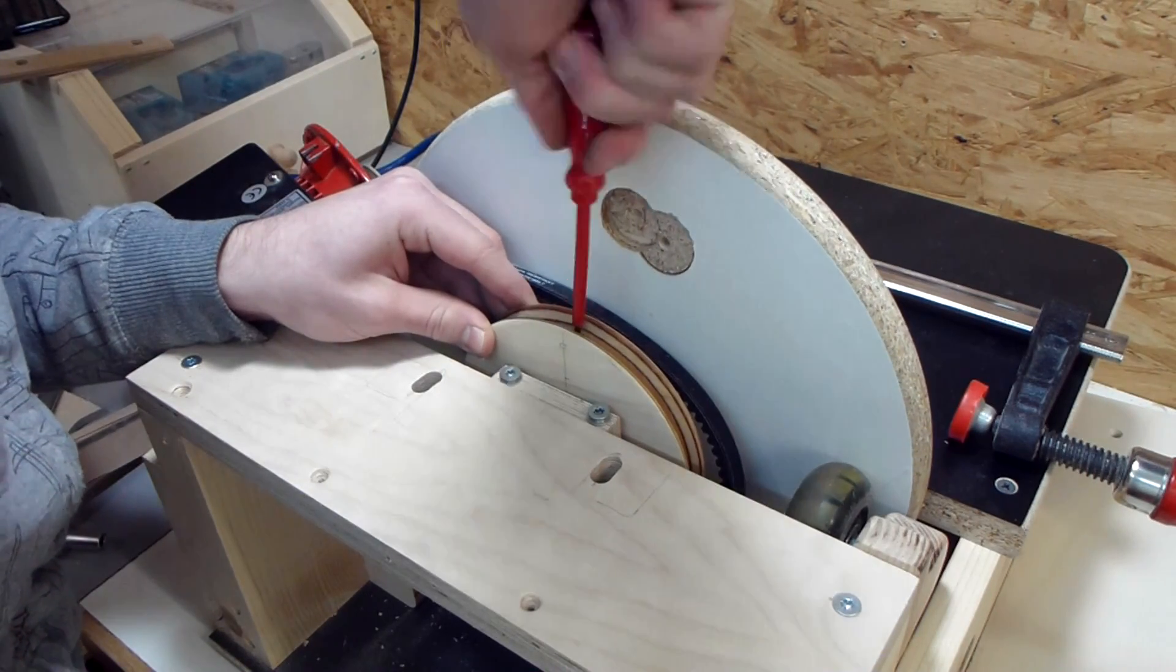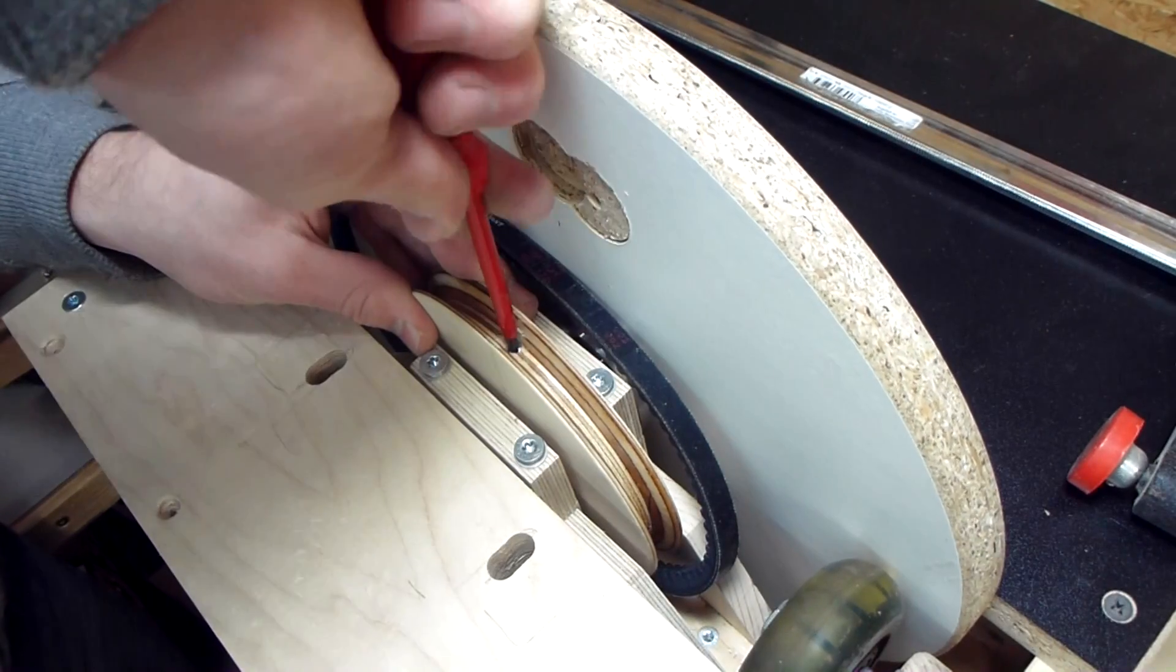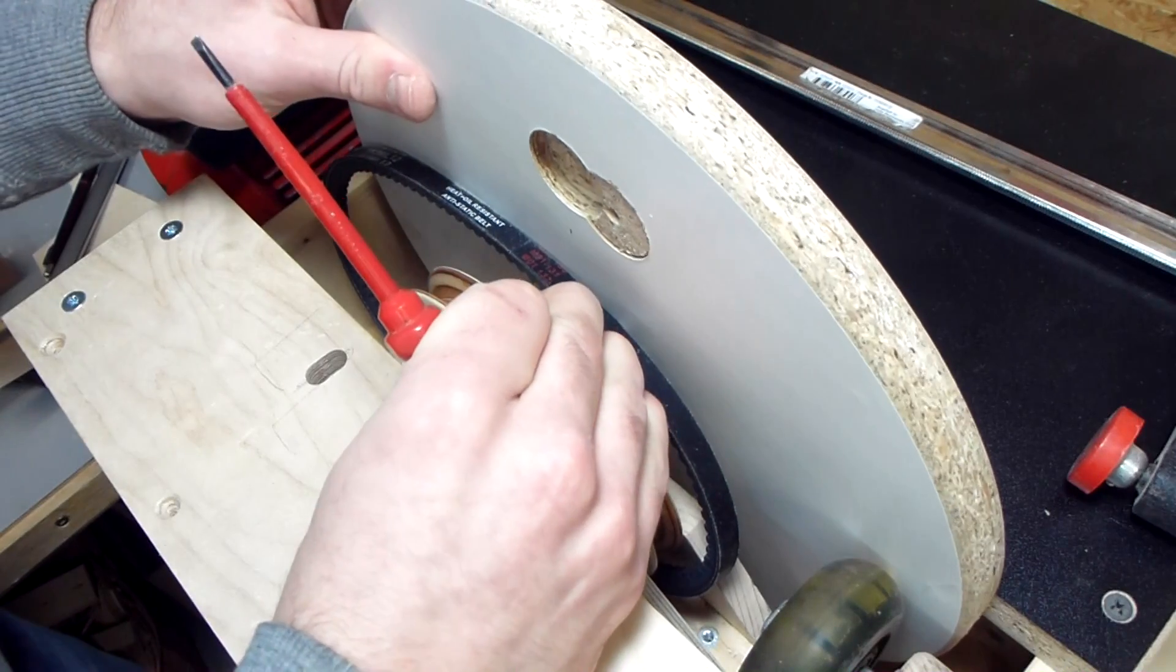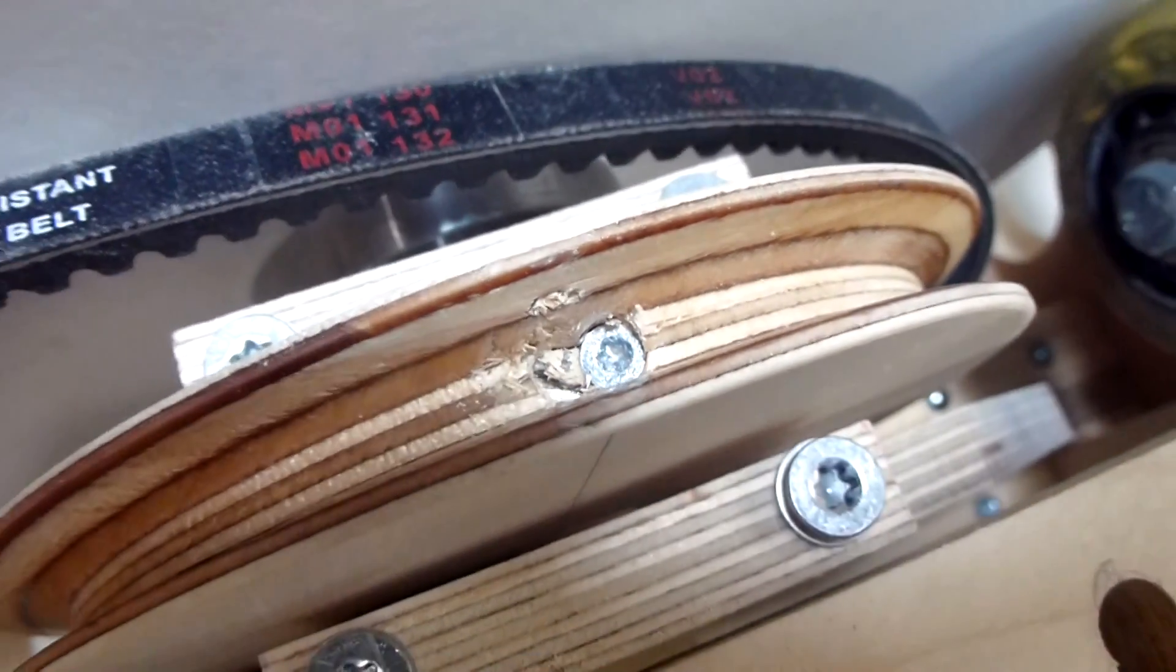The set screw itself is mounted in a slightly undersized hole through the pulley and it cuts its own threads in the wood. And I also put another screw next to the set screw and its head prevents it from coming loose again.